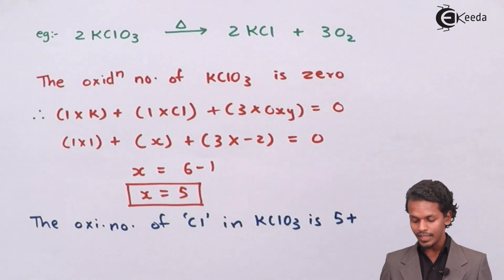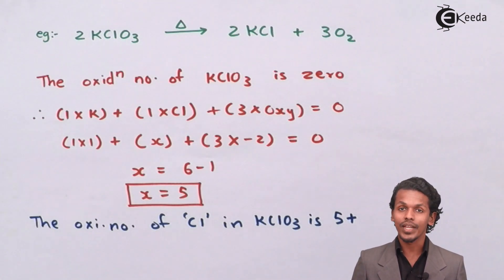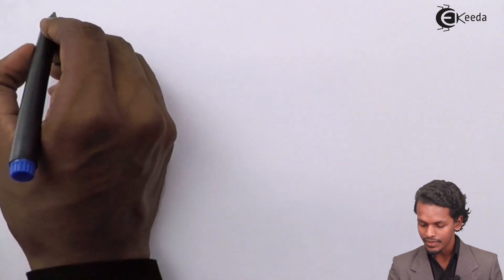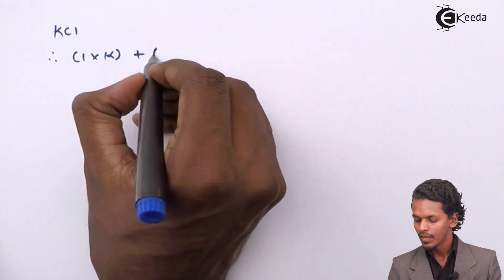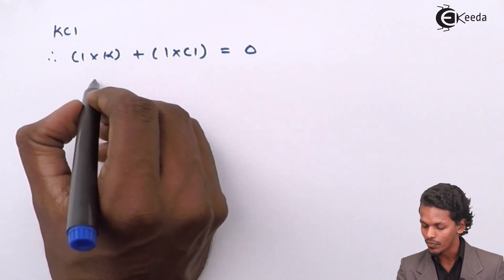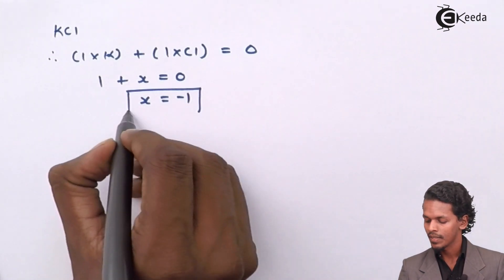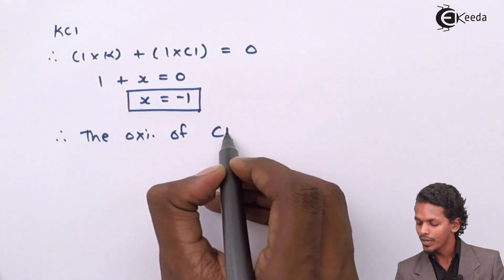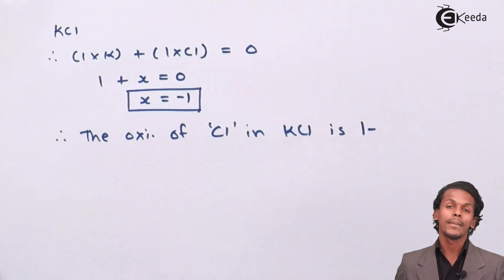We have determined the oxidation number of Cl in KClO₃, but we also need the oxidation number of chlorine in the product KCl. For KCl, the overall value is zero: 1×(K) + 1×(Cl) = 0, so +1 + X = 0, giving X = −1. The oxidation number of the chlorine atom in KCl is −1.